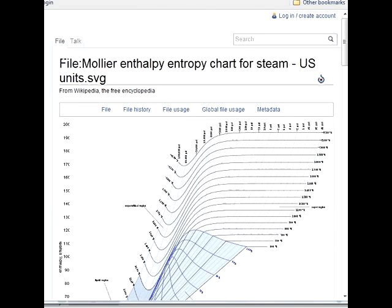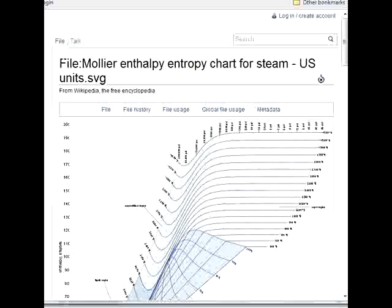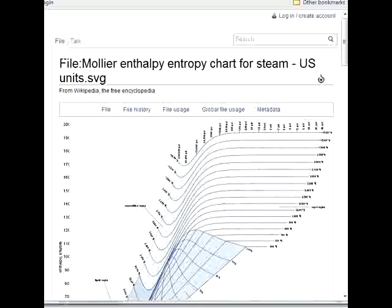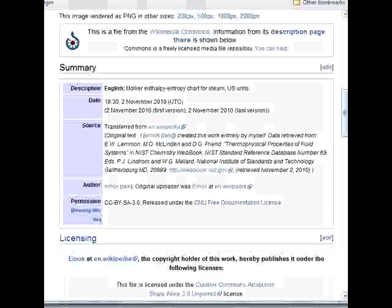Okay, here I want to talk about the Mollier chart. This is taken from Wikipedia, and I'm going to use this chart to describe some things about it. The Mollier chart is for steam. This Mollier chart is for steam, and I want to give some credit to the authors.